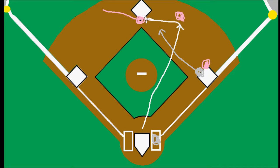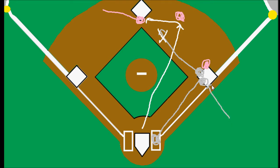He'll throw and get the out at that base, which means the runner who started the play on first base is out. The batter will go to first base having advanced on the fielder's choice. And even though this is the third out in the inning, the batter is still counted as a player being left on base for that inning. So that's runners left on base.